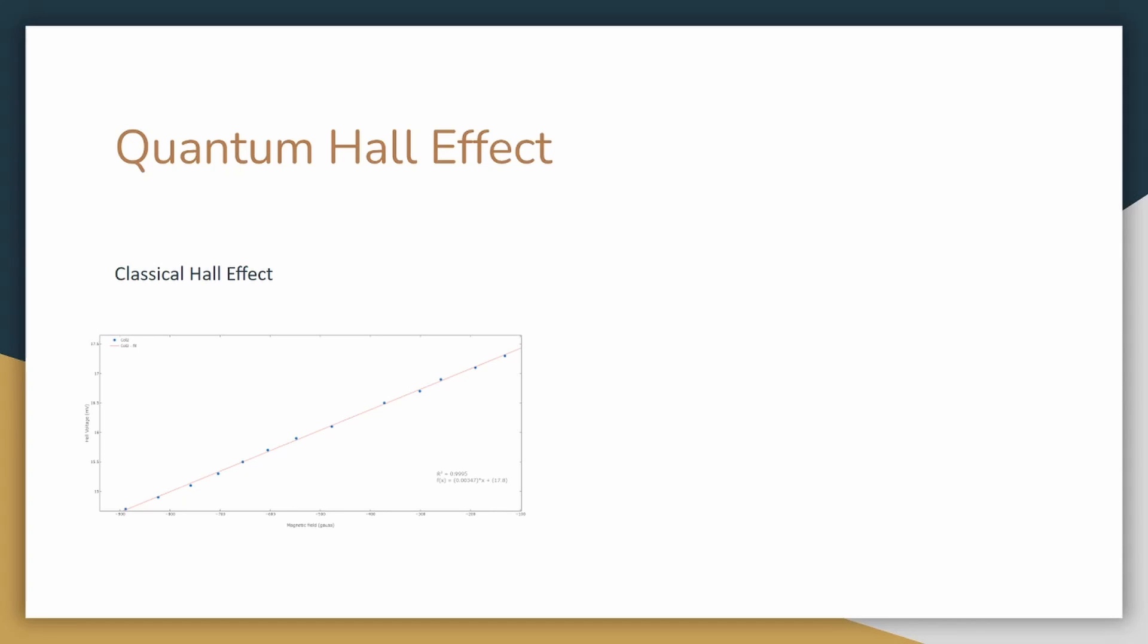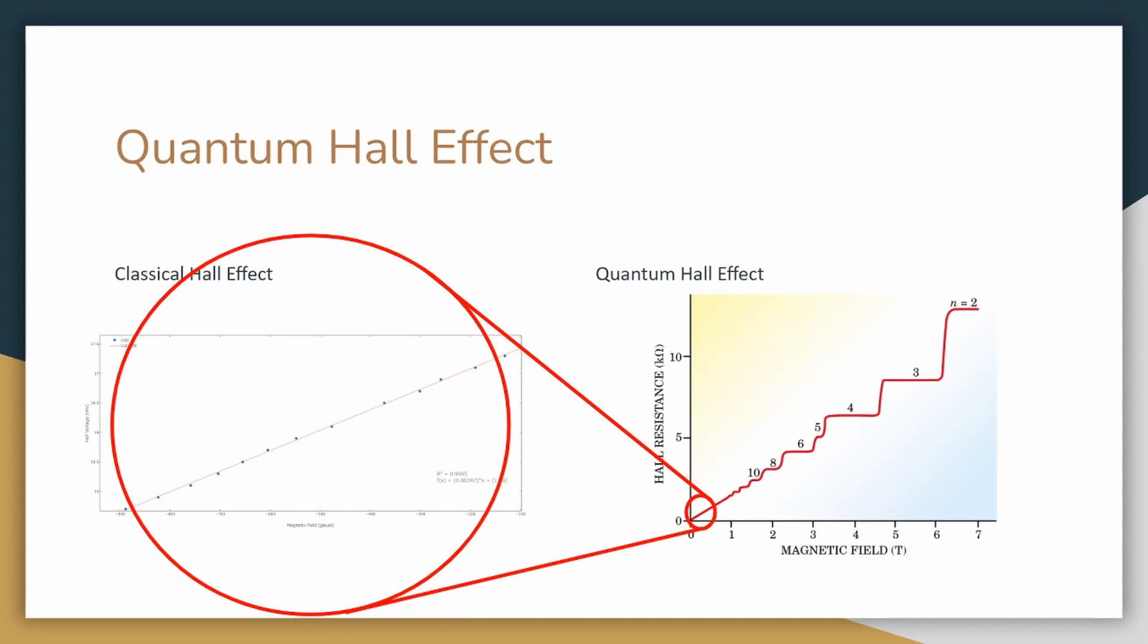However, in a 2D flat material under an extremely strong magnetic field, we expect the electrons to move in very small circles and unable to carry current, effectively an insulator. But results show that there is measurable current, and the flat areas show the quantization of Hall resistance.